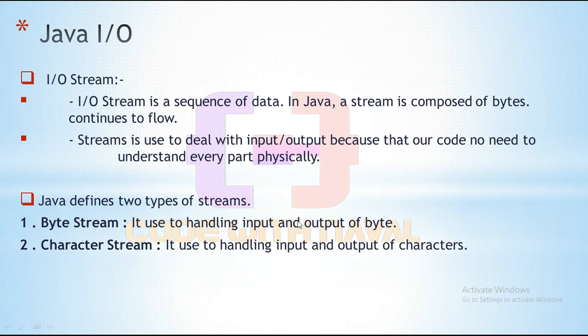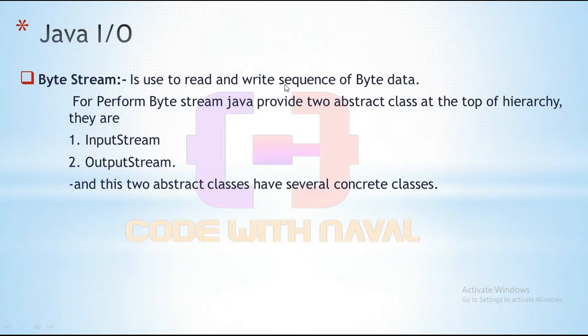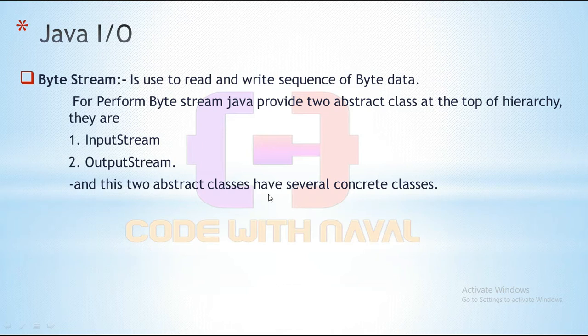Byte stream is used to handle input and output of bytes — it reads and writes a sequence of byte data. Java provides two abstract classes at the top of the hierarchy: InputStream and OutputStream. These two abstract classes have several concrete classes. Concrete classes are fully implemented classes — we can simply create objects of those concrete classes and use them.